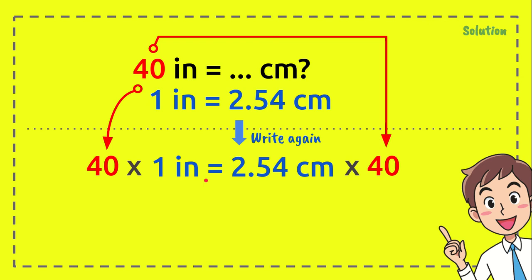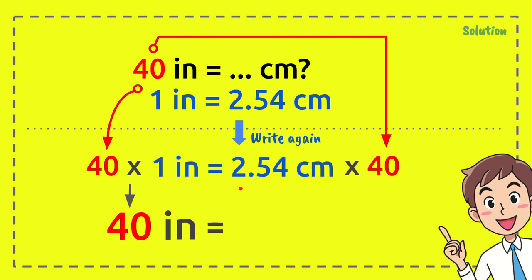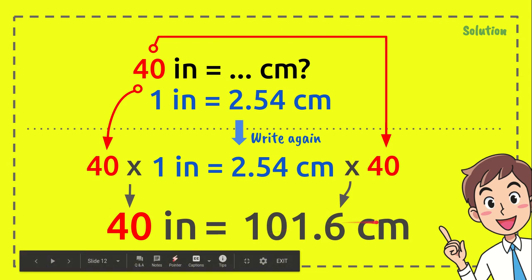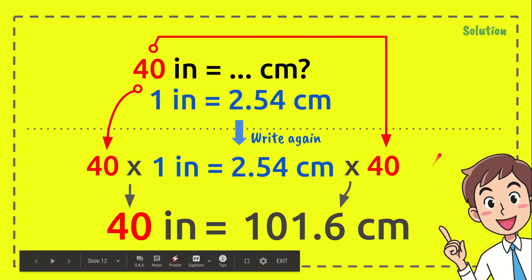40 times one inch equals 40 inch, just like the number that we have from the question. And 2.54 times 40 equals what? It equals 101.6 centimeters. And this is the solution of the problem. This is the answer.